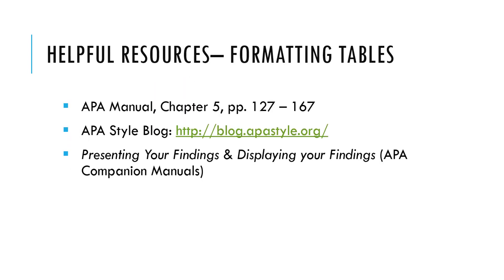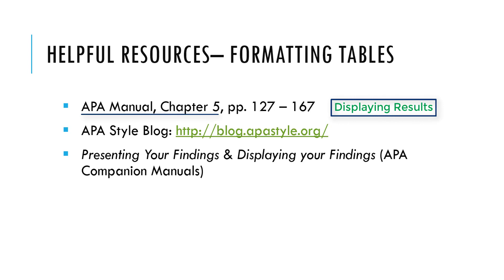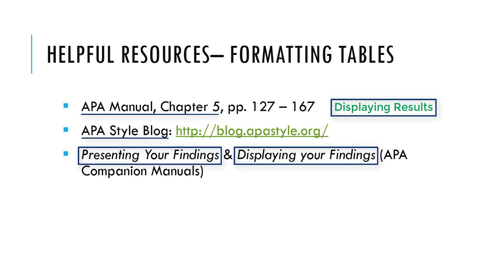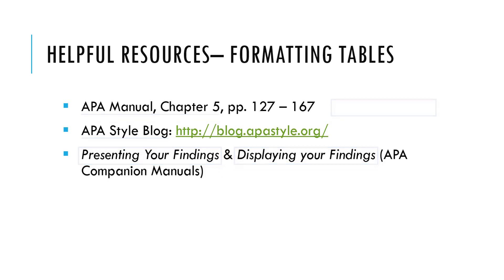You can find all of APA's rules for developing tables and figures within a few helpful resources. Chapter 5 of the APA Manual, entitled Displaying Results, gives all the relevant details about structuring APA-compliant tables and figures. The official APA style blog is operated by style experts employed by APA and provides up-to-date information about APA style rules. Finally, two companion manuals, presenting your findings and displaying your findings, provide detailed information about composing APA tables and figures.